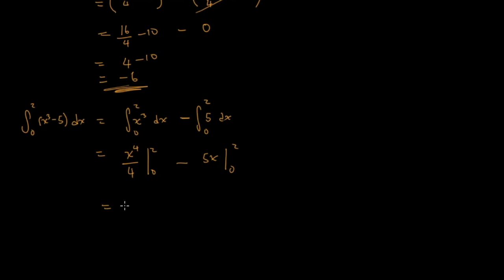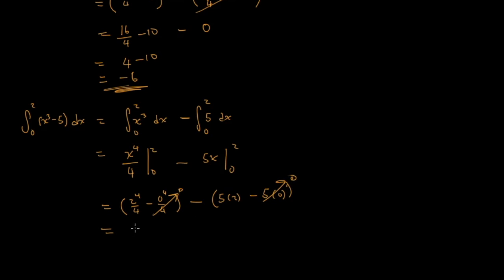Evaluating, we have 2 to the power of 4 over 4 minus 0 to the power of 4 over 4, minus the quantity 5 times 2 minus 5 times 0. The zero terms cancel out, leaving 16 over 4, which is 4, minus 5 times 2 which is 10. That gives us negative 6. This negative 6 represents the area underneath this curve from 0 to 2.